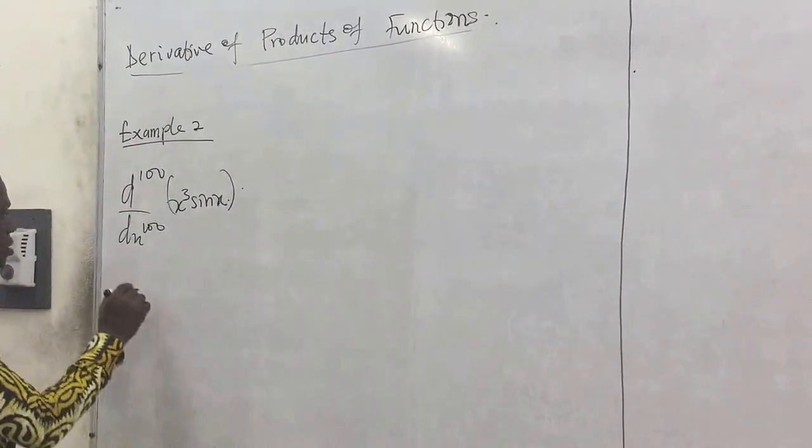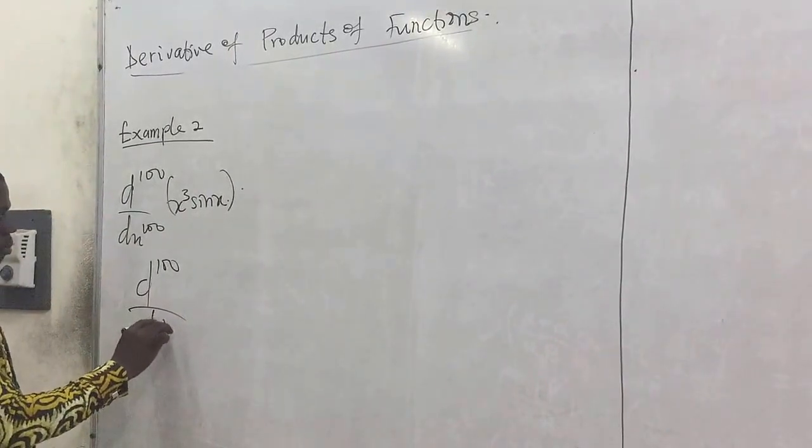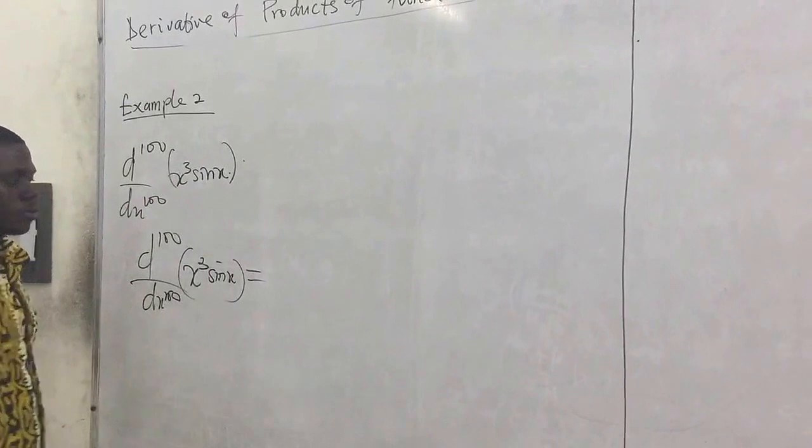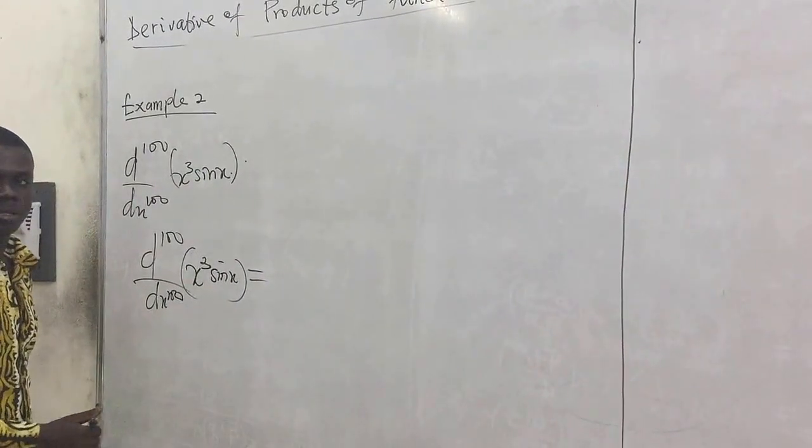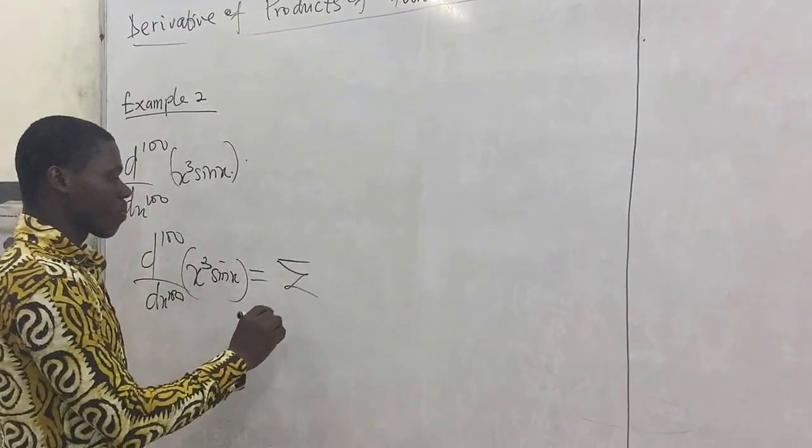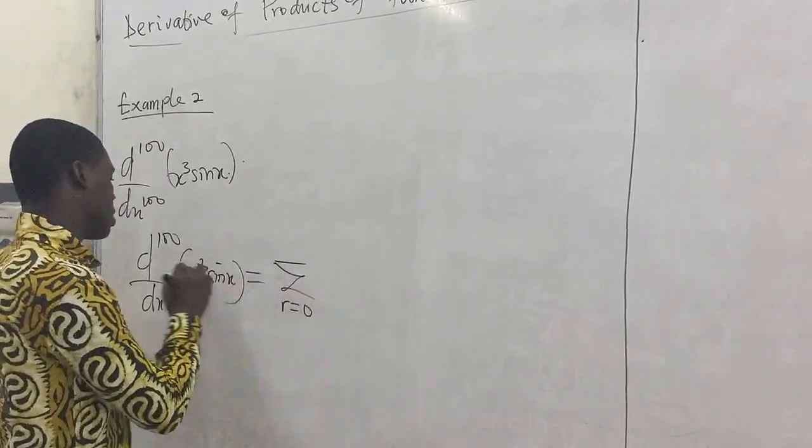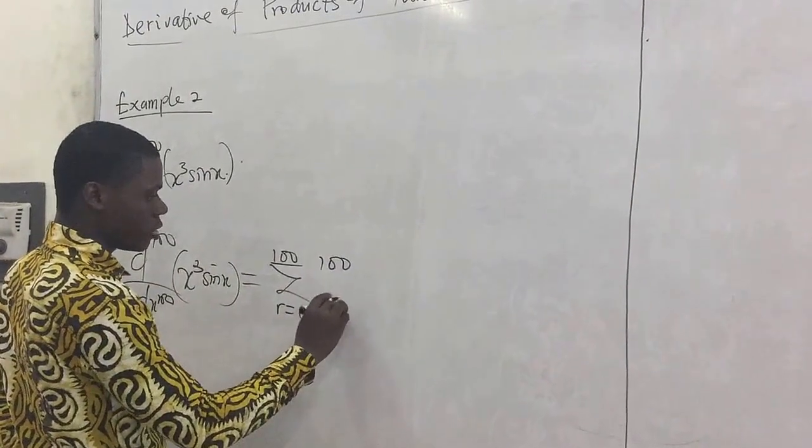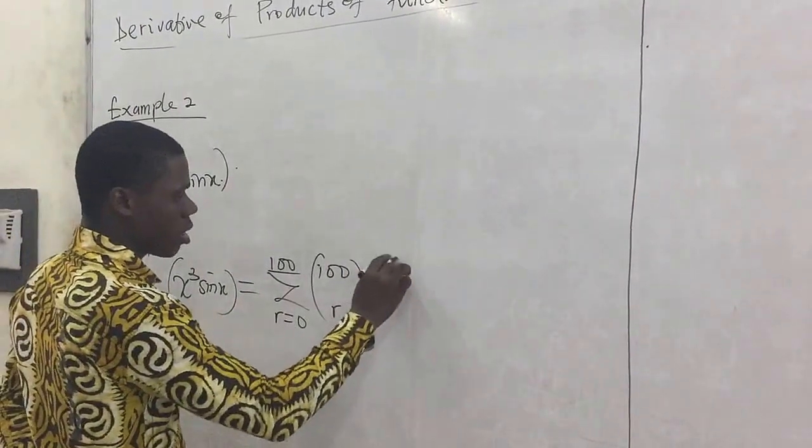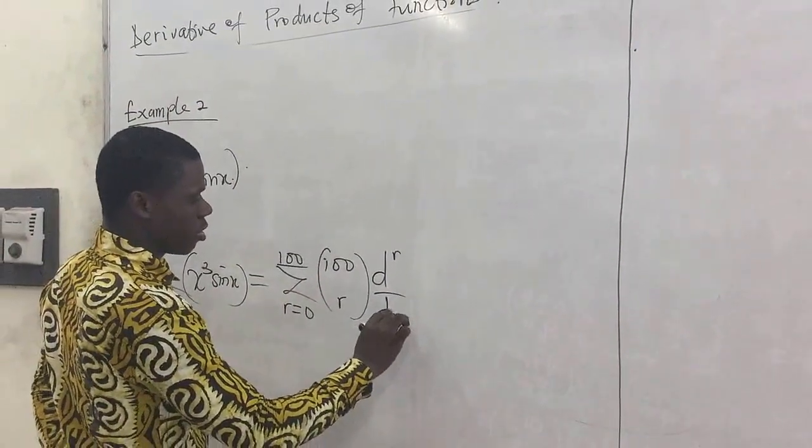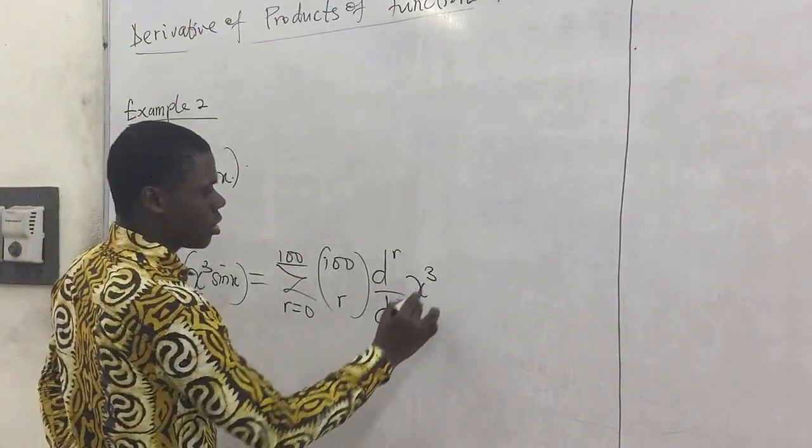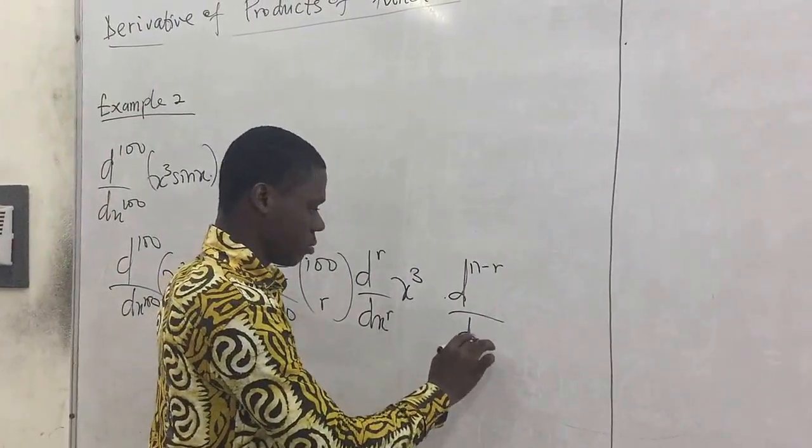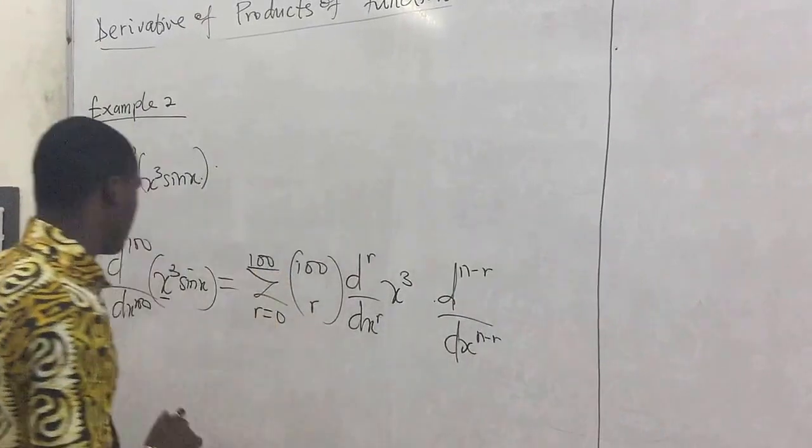Well, we say that the 100th derivative of this particular product of functions would be equal to, by the theorem by Leibniz, the sum where r begins from 0 and ends at 100. 100 combination r, then the rth derivative of the first function, x cubed, multiplied by n minus r derivative of the next function.